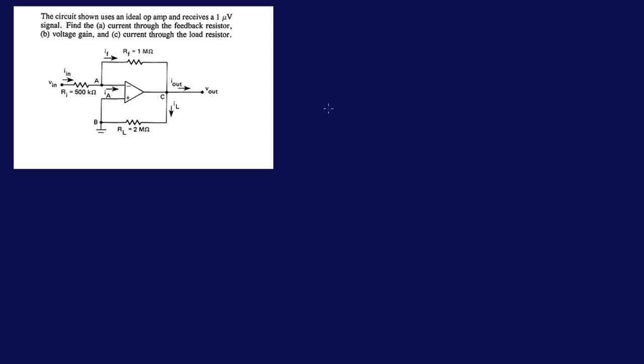So this is an op-amp circuit. The circuit shown uses an ideal op-amp and receives a 1 µV signal. Find the current through the feedback resistor, voltage gain, and the current through the load resistor.